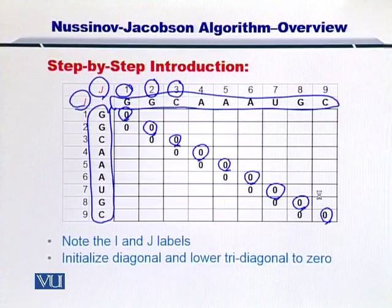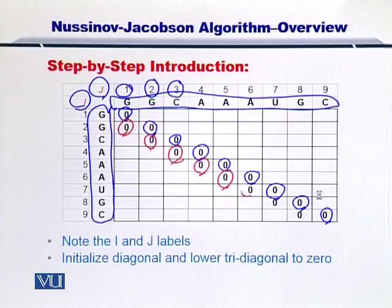As a next step, the lower tridiagonal is also set to zero as shown here in red. So this is how you begin to solve the Nusinov-Jacobson algorithm. So once you have initialized your matrix and you have set the indices of each nucleotide on top and on left, then you're ready to move forward.